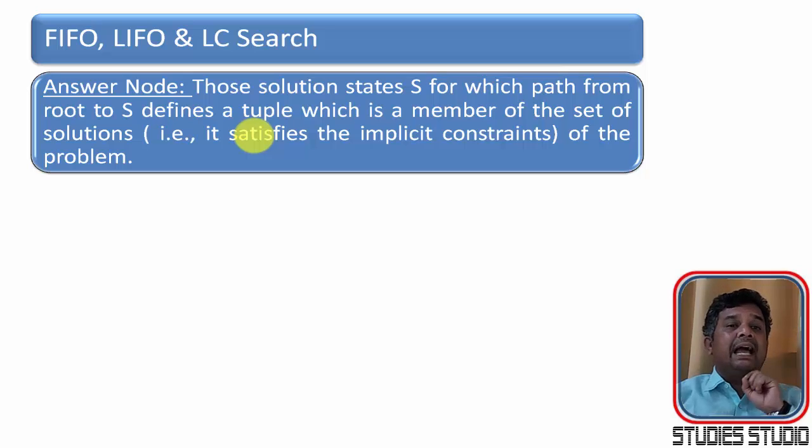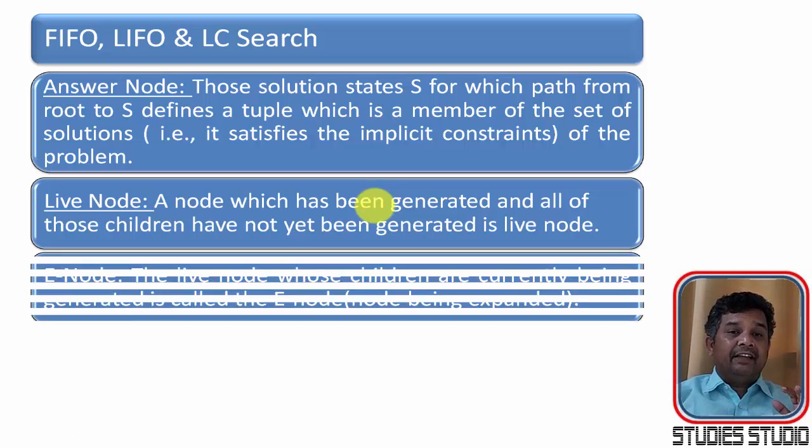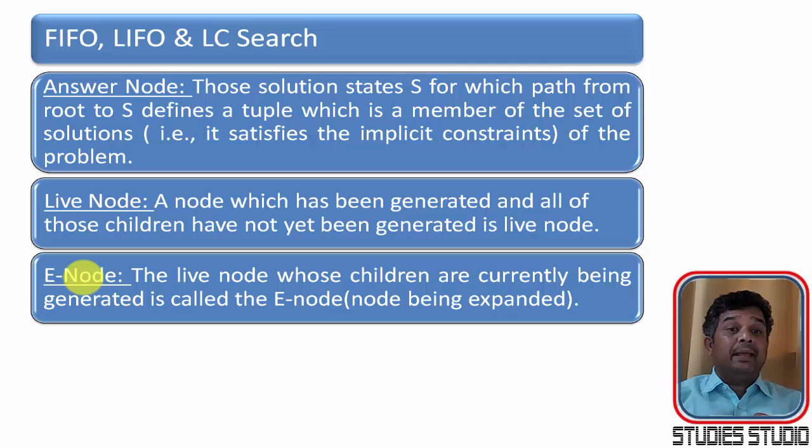The next one is live node. A node which has been generated and all those children have not yet been generated is called a live node. It means you have generated the children but their children are not yet generated. Next one is E-node. The live node which children is currently being generated is called E-node.